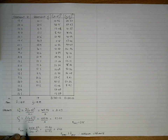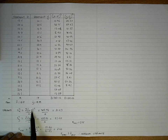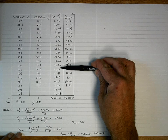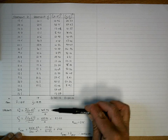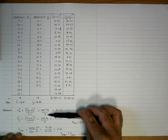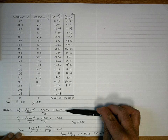But is that a significant difference? That's what our test is going to determine. In order to calculate the variance for sample X, the formula is the sum of (X minus X-bar) squared, divided by n minus 1. The sum of those squared deviations gives 387.54, divided by n minus 1 which is 18, resulting in a variance for Treatment X of 21.53.